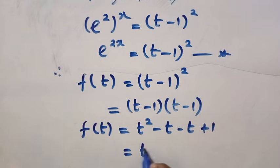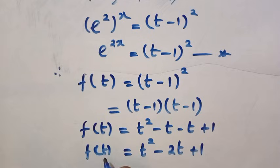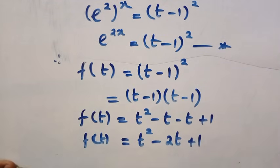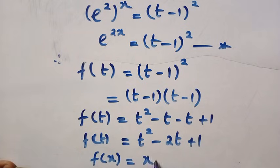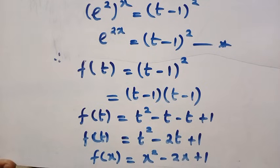So f of t equals t squared minus 2t plus 1. This is the result of f of t. By changing t to x, we are going to have f of x equals x squared minus 2x plus 1. This is what we get for f of x, and this is the first method. Let's now provide the solution using the second method.